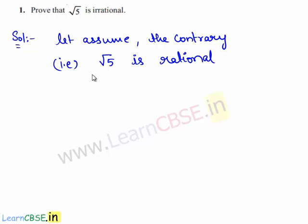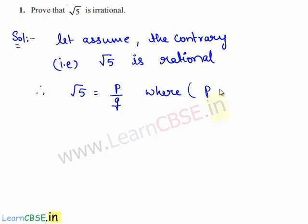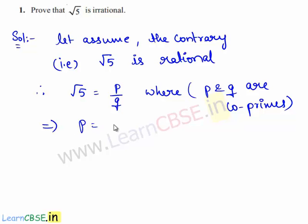Since root 5 is rational, it can be expressed in the form of p by q. Therefore, root 5 can be written as p upon q, where p and q are co-primes. From this expression, we have p is equal to root 5 times q. Now, squaring on both sides, we have p squared is equal to 5q squared. Let this be equation 1.